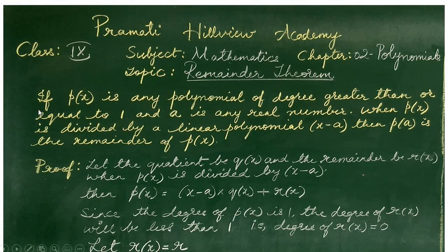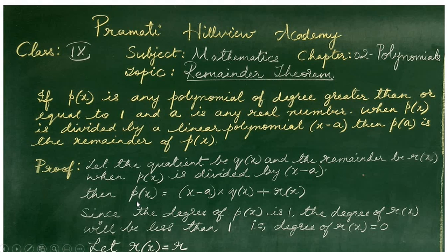Remainder theorem states that if p of x is any polynomial of degree greater than or equal to 1 and a is any real number, when p of x is divided by a linear polynomial x minus a, then p of a is the remainder of p of x. Let the quotient be q of x and the remainder be r of x. When p of x is divided by x minus a,